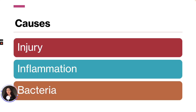The causes of peritonitis can be from an injury like a gunshot wound or a stab wound, or inflammation that extends from an organ outside the peritoneal area, such as a kidney. Bacteria is the most common cause — the most common organisms implicated are E. coli, Klebsiella, Proteus, Pseudomonas, and Streptococcus.